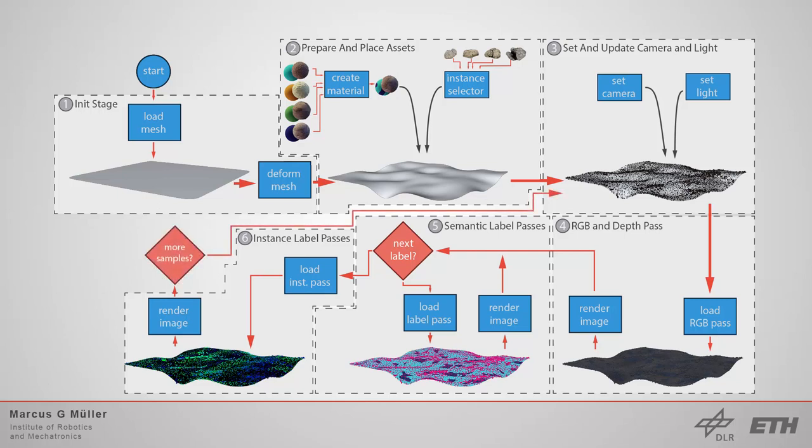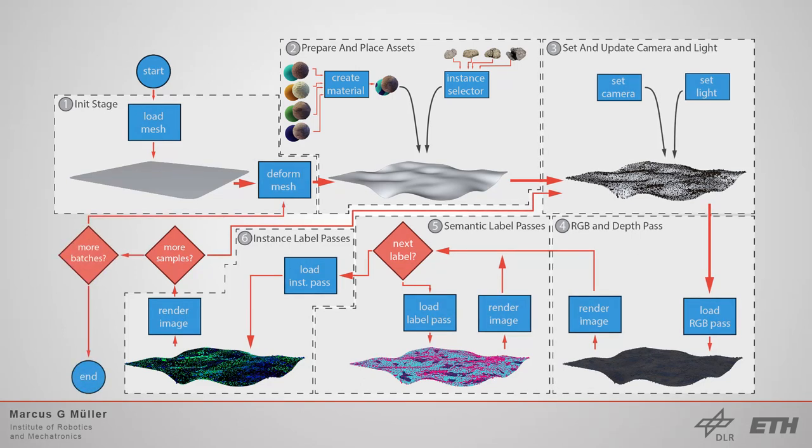Once the passes are rendered, a new sample for the batch is created, meaning that the sensor poses and light setup are adjusted accordingly to the config file. Whenever all samples are rendered for one batch, the next batch is prepared, in this case also the stage deformation and also the assets like materials and objects are updated. This procedure is continued until all batches are rendered.